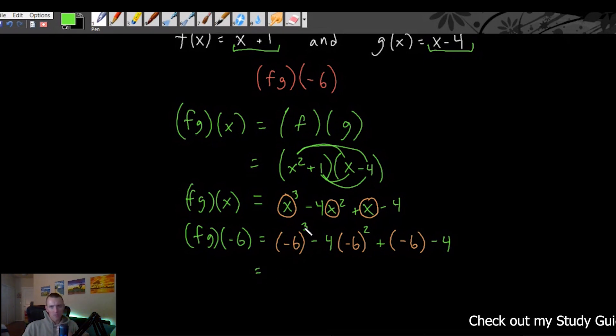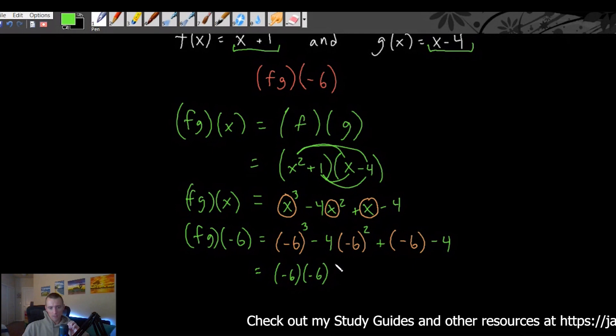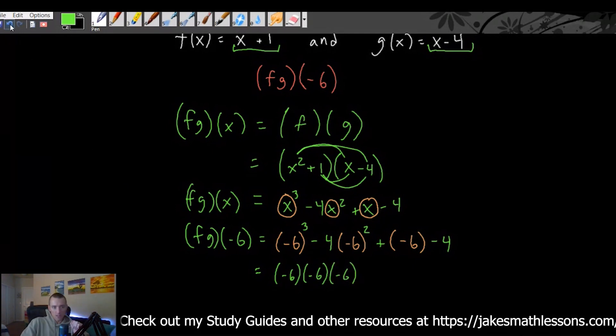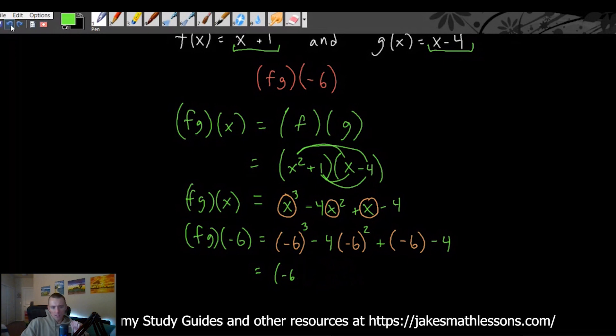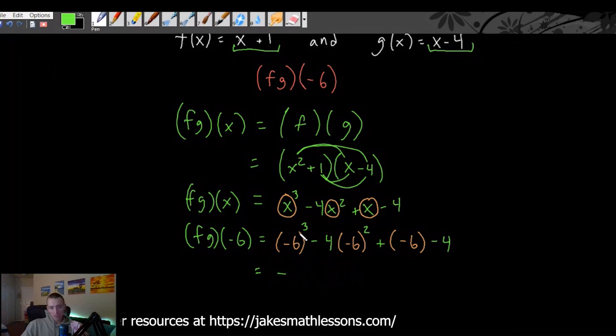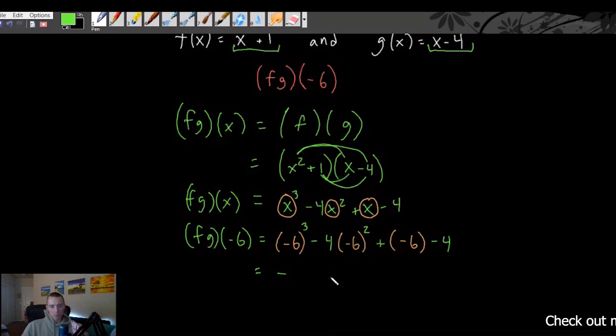So in this case, we have negative 6 cubed. Keep in mind, a negative number cubed is like saying negative 6 times negative 6 times negative 6. A negative times a negative times a negative is a negative. So negative 6 cubed should give us a negative number here. And if you misplace the parentheses, you can see with this term here, just squaring the 6 and not squaring the negative 6 is going to give you the wrong number there. So that's what I mean about making sure you use the parentheses like I did here.